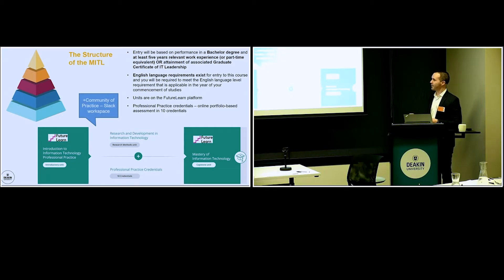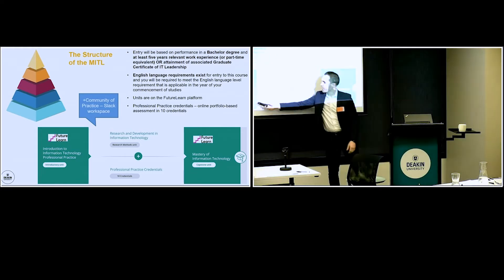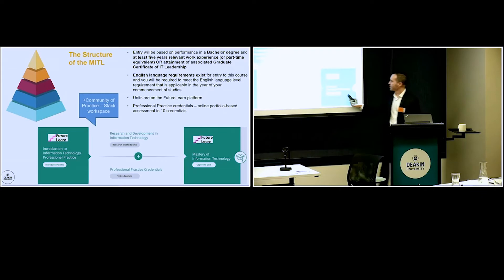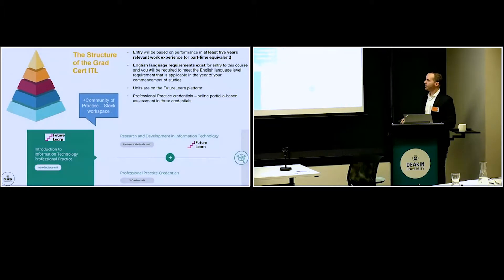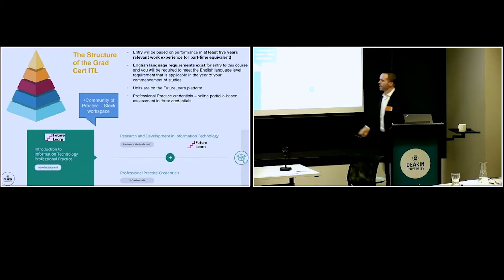I've only got a few minutes left, so I'll quickly run through some stuff here. There's the structure of the master's degree. We've got the preparatory unit, preparatory unit, the 10 credentials, then the capstone unit. We've introduced a community of practice, which is a Slack workspace, which integrates all the students. Because at this point here they venture off and they're doing their own thing, I brought in this Slack workspace where students can discuss with other students, but also the other students in the other flavors of this degree across the university. There's the grad cert and the difference there—you've got the two prep units, but only three credentials and no capstone.